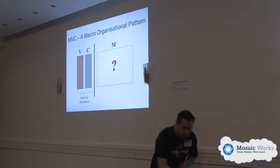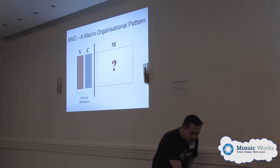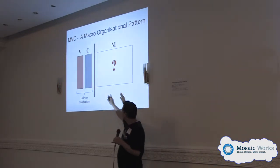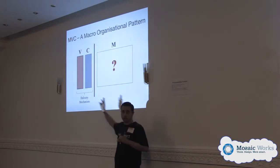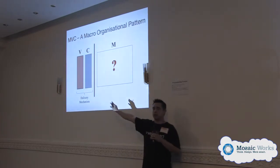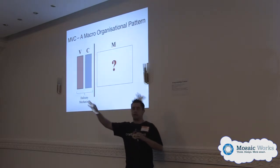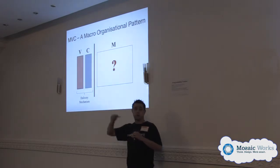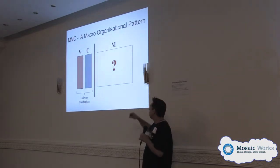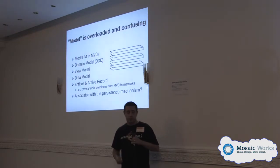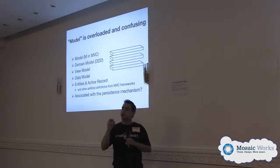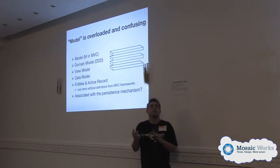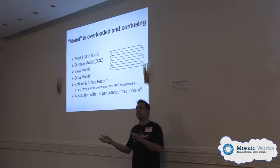The conclusion: the View and the Controller belong to the delivery mechanism — it's how you deliver your application. That will determine which MVC variation you choose, but we should be able to decouple our model from our application. The question is: what is model anyway? Model is a very overloaded and confusing term, because there are many different interpretations — that's why we don't know where to put the logic. Are we talking about the M as a general term in MVC, domain-driven design, view model, data model, databases, entities?